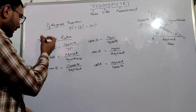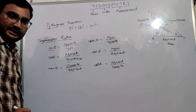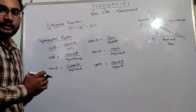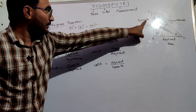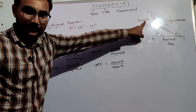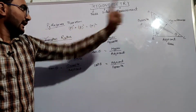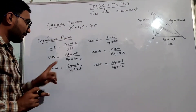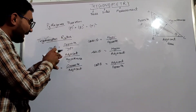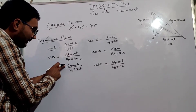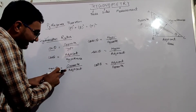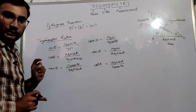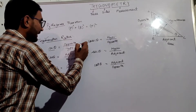Sin theta will be opposite side upon hypotenuse, which means opposite side is perpendicular and hypotenuse is the longest side. Cos theta is adjacent side upon hypotenuse, where adjacent means base. Tan theta will be opposite side upon adjacent side, which means perpendicular upon base.